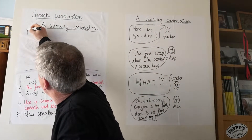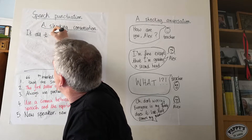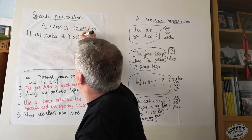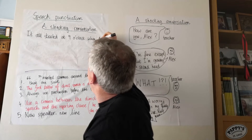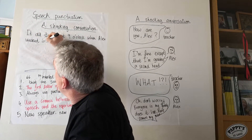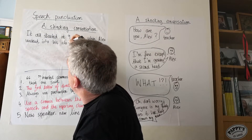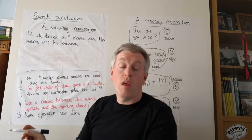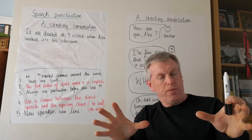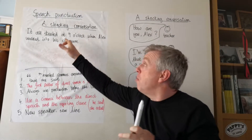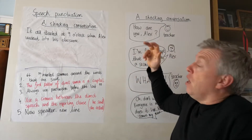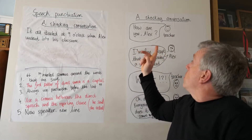So I might start: 'But it all started at nine o'clock when Alex walked into his classroom.' Now, this is the bit I want to get my plan in. So I've said, just in a sentence, where it happens — the classroom — and when — at nine o'clock. So I've given my reader a little bit of a sense of the setting. I'm going to look at my plan. 'How are you, Alex?' asked his teacher. I'm going to use 'asked' because it's a question, isn't it?